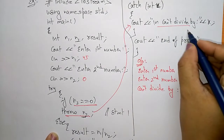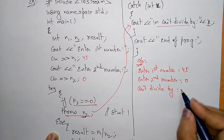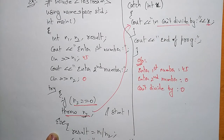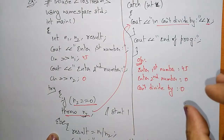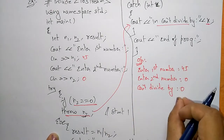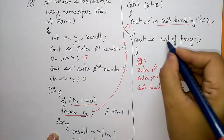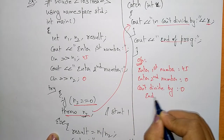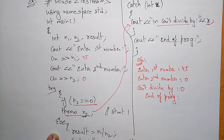Now the catch block prints 'can't divided by' and the value x is zero, so it prints: 'can't divided by 0'. So 45 divided by zero is not possible — instead of crashing the program, it just displays zero and 'end of the program'.